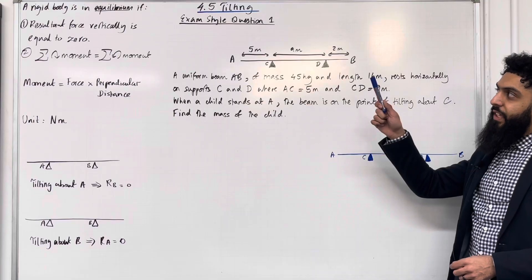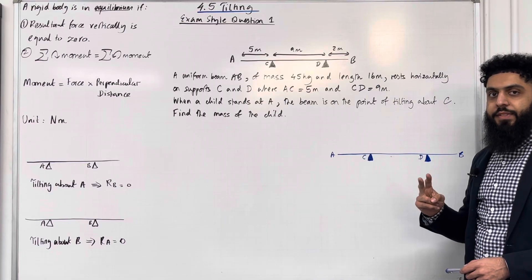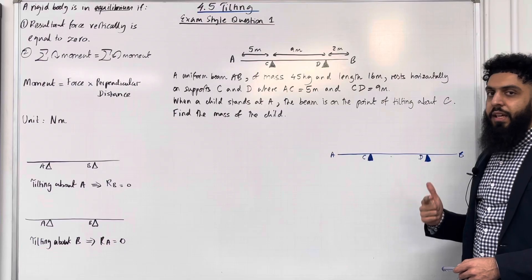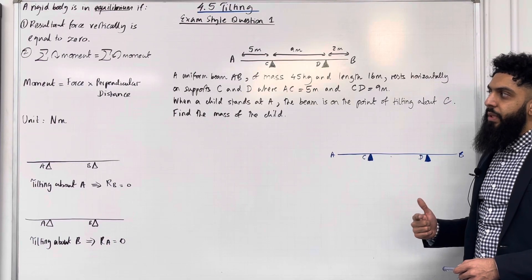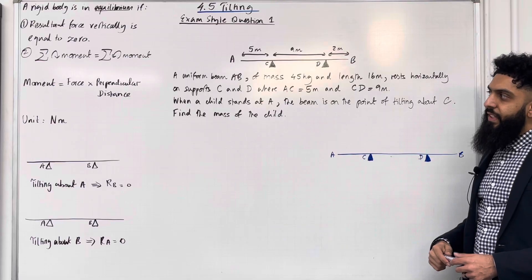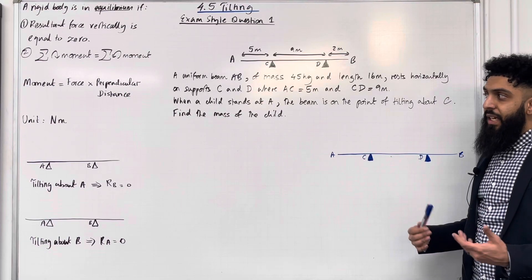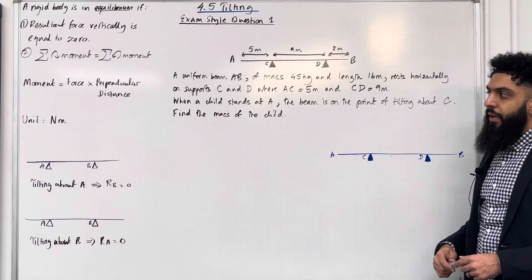If a rigid body is in equilibrium, two conditions are satisfied. Condition number 1: resultant force vertically is equal to 0. Condition number 2: sum of clockwise moments is equal to sum of anticlockwise moments. The moment of a force is given by force multiplied by the perpendicular distance, and the unit we use is Newton metres.